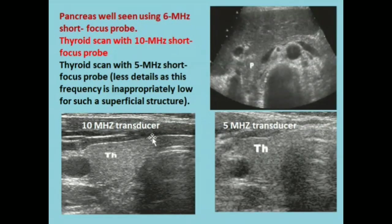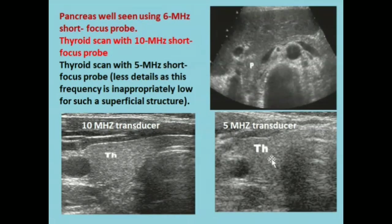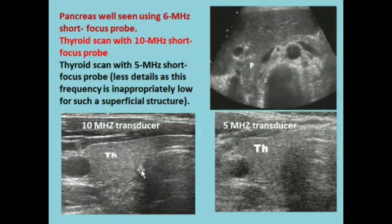In this image, a 10 MHz transducer is used for the visualization of the thyroid gland. While in this image, a 5 MHz transducer has been used. With the 5 MHz transducer, lesser information is appreciated because this frequency is too low for a superficial organ such as the thyroid, while 10 MHz is the proper frequency selection for visualization of the thyroid gland.